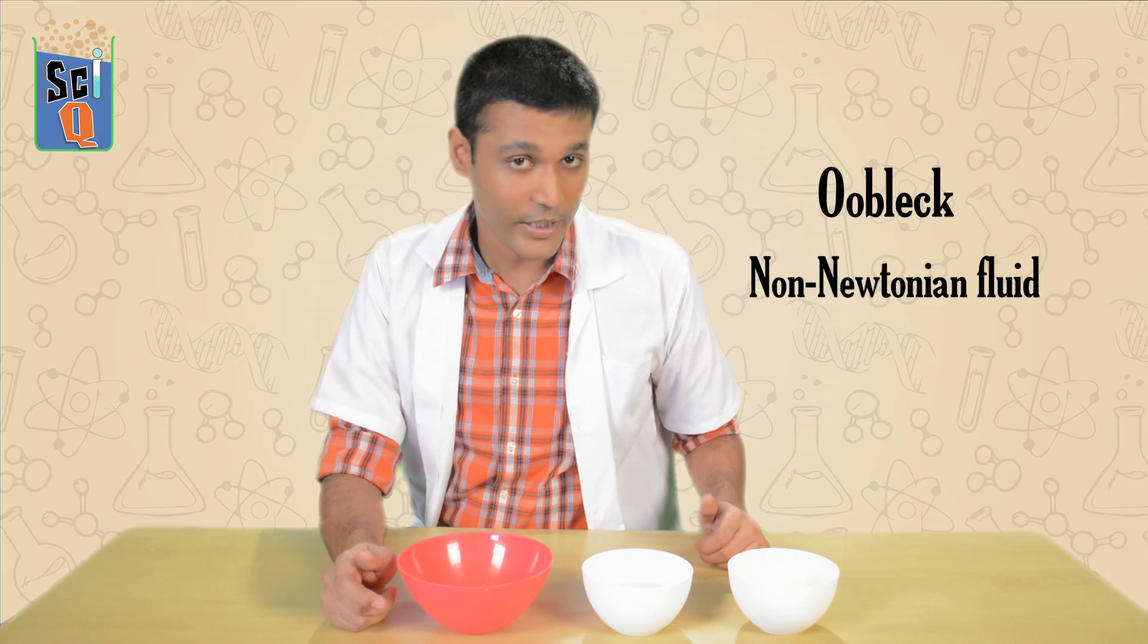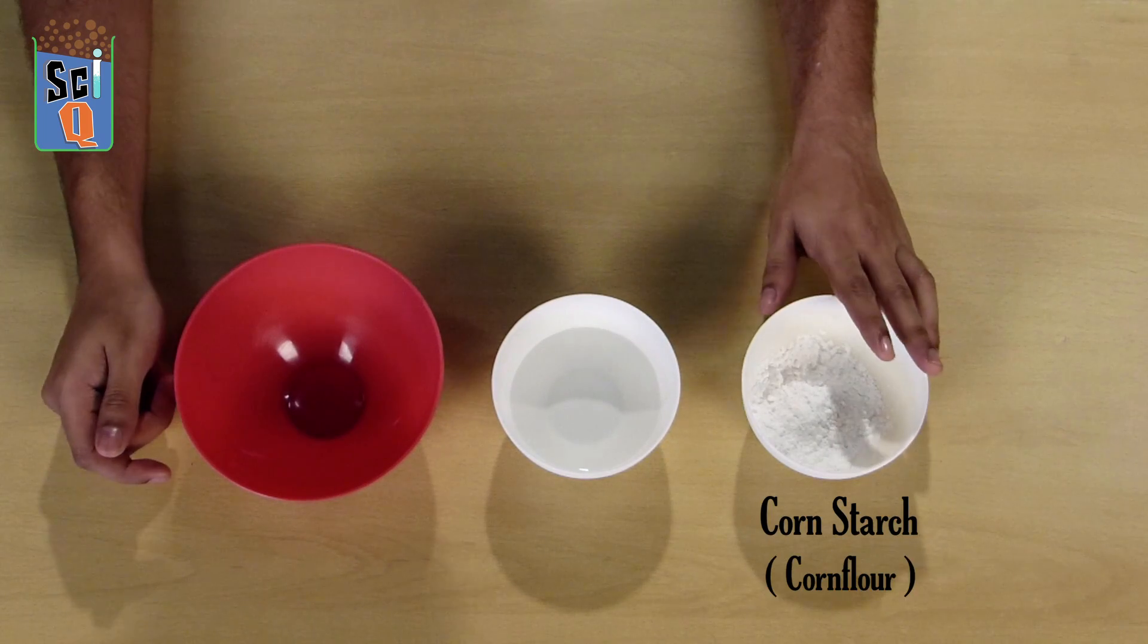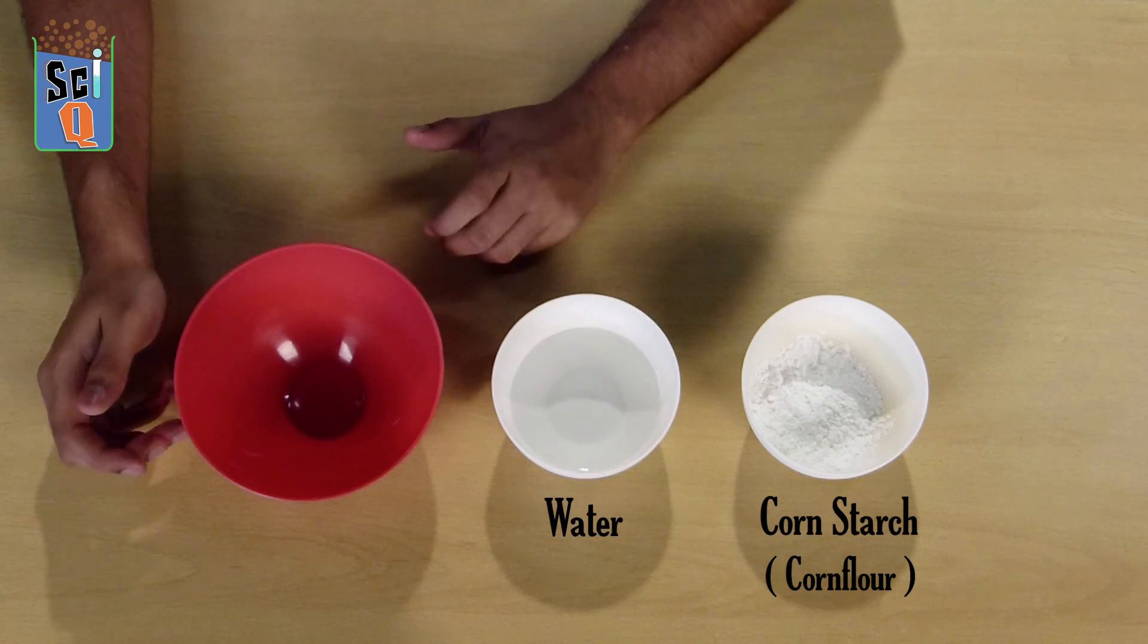Today we're going to be playing with Oobleck, better known as a non-Newtonian fluid, for which we're going to need some cornstarch, also known as corn flour, a little bit of water, and something to mix them in.